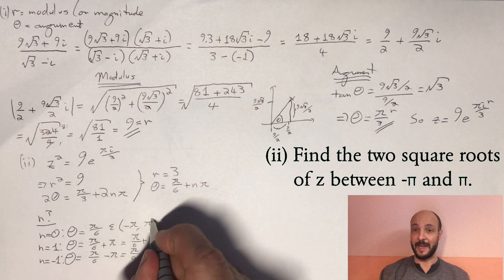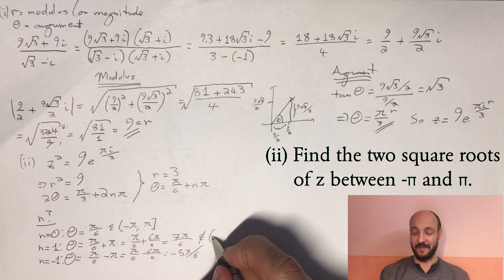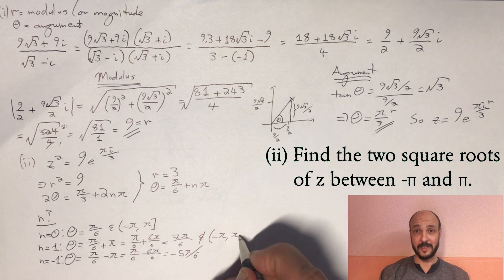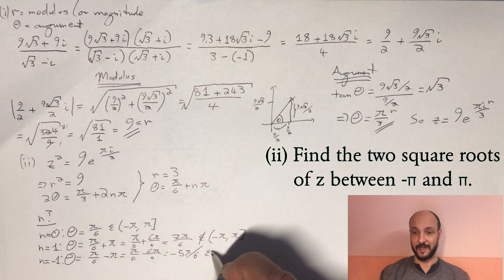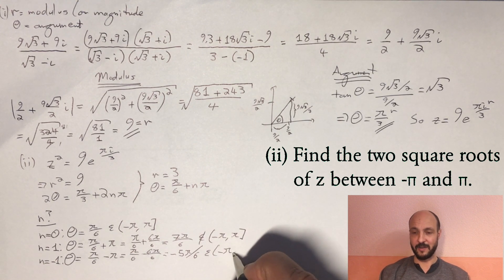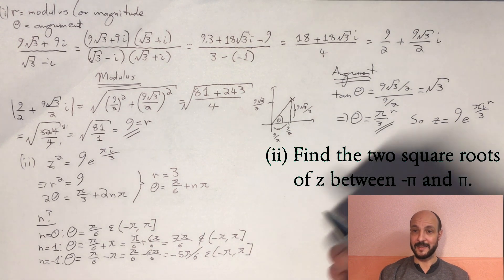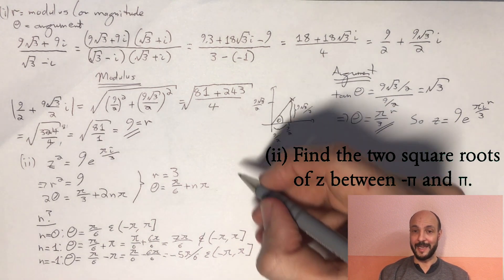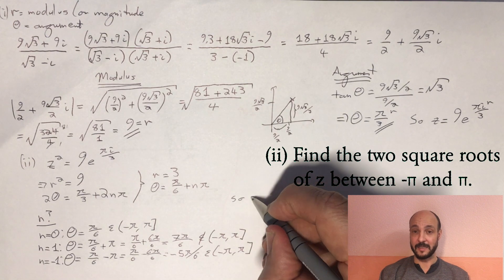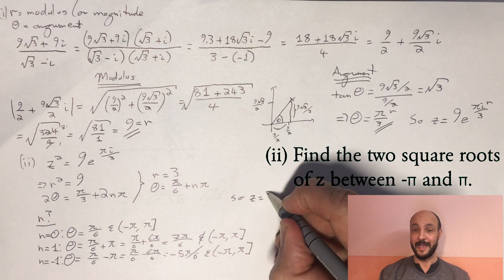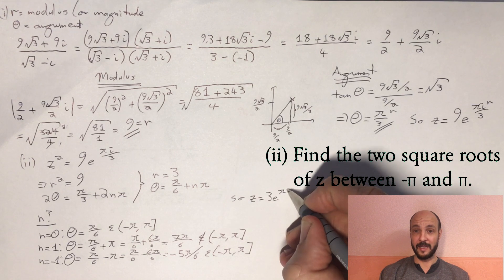And if we try n as 1, π/6 + π is 7π/6. That's greater than π, so that's no good for it. So obviously everything outside of those is going to be too big or too small. So we've got two answers. z is equal to 3e^(πi/6), or 3e^(-5πi/6).